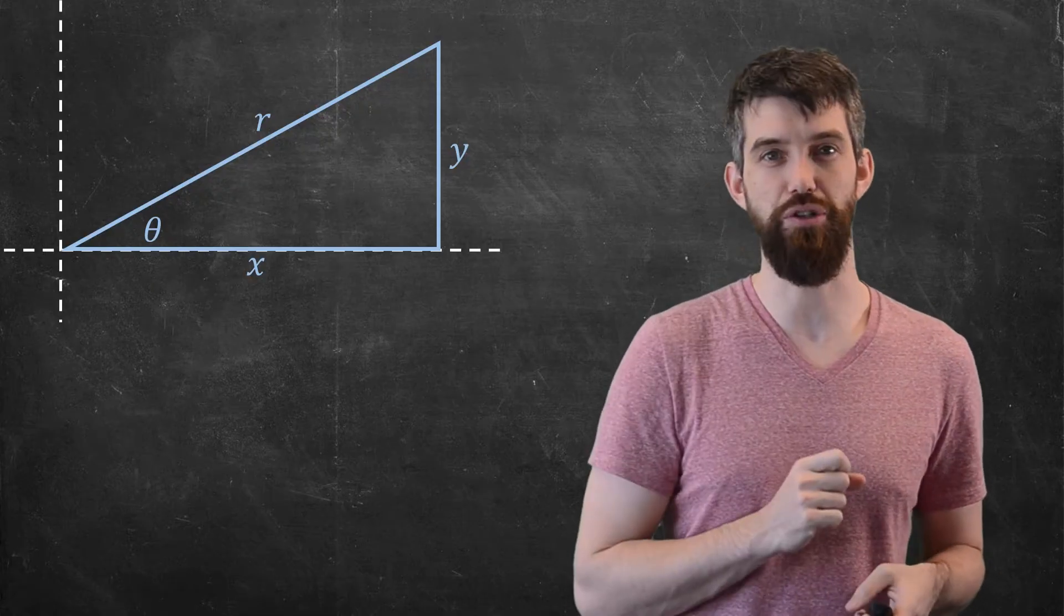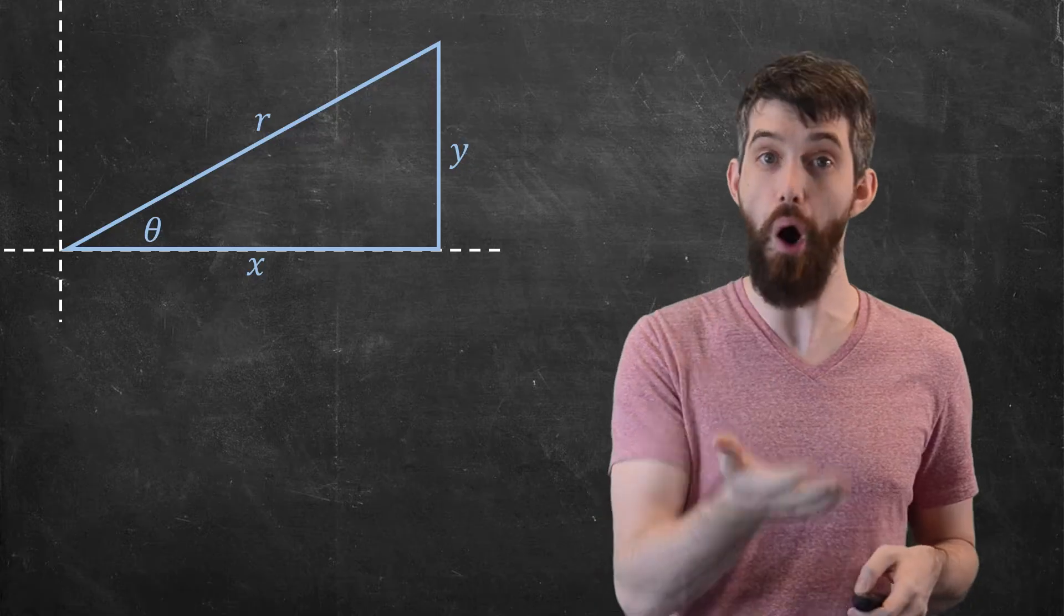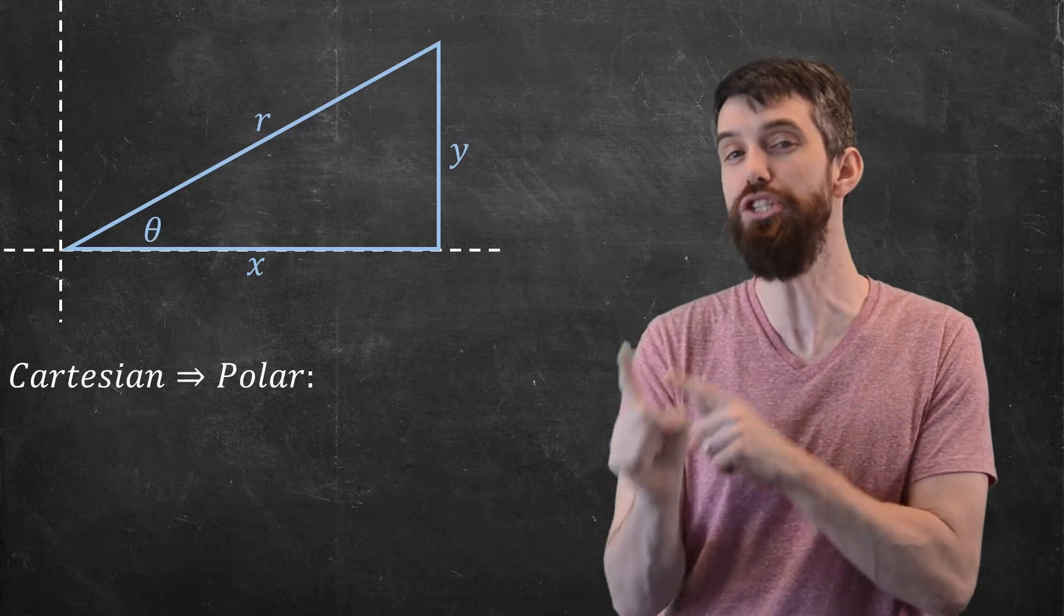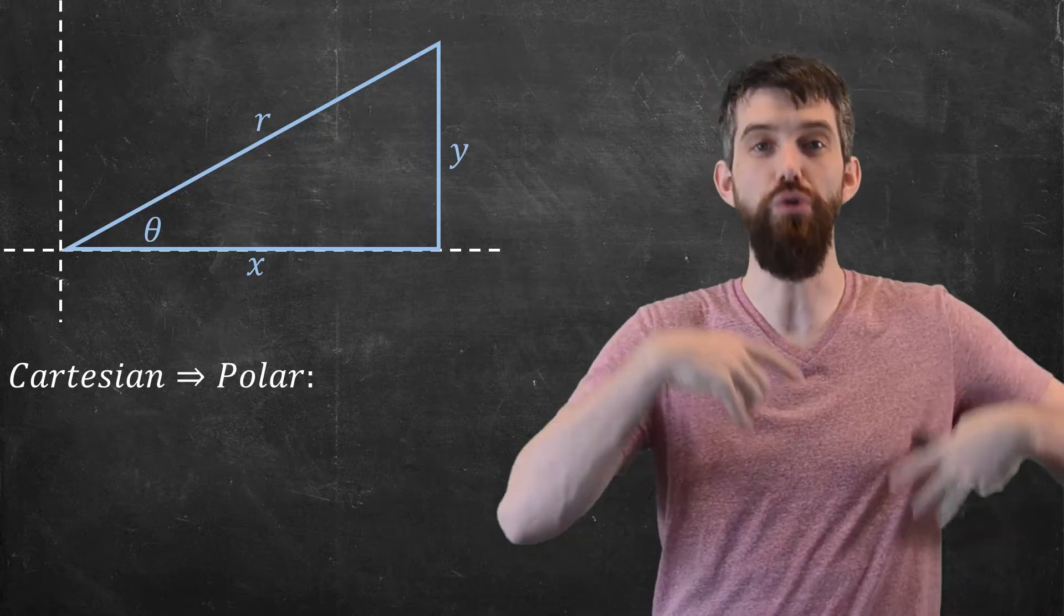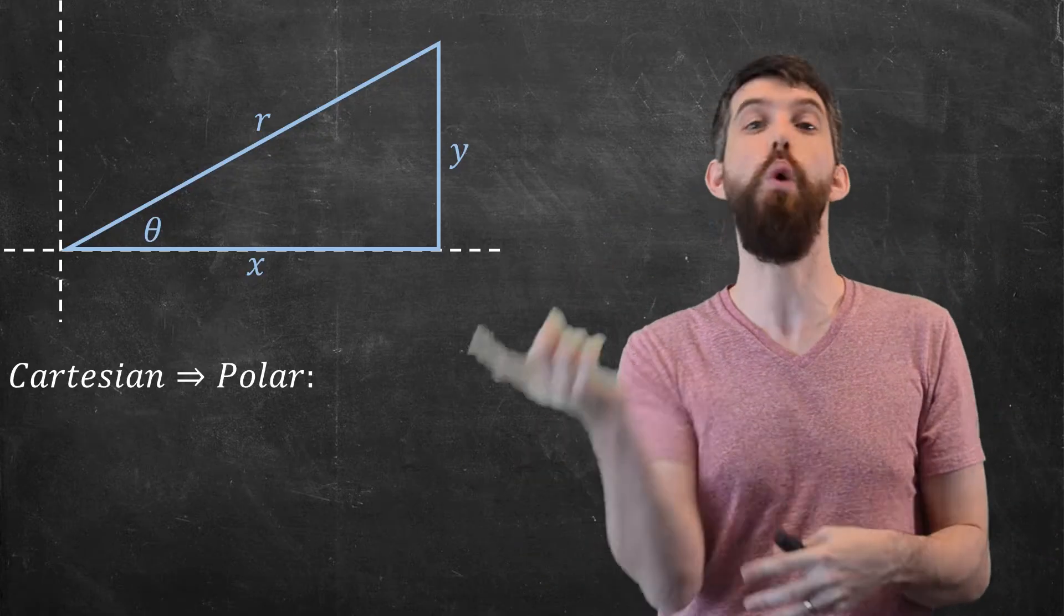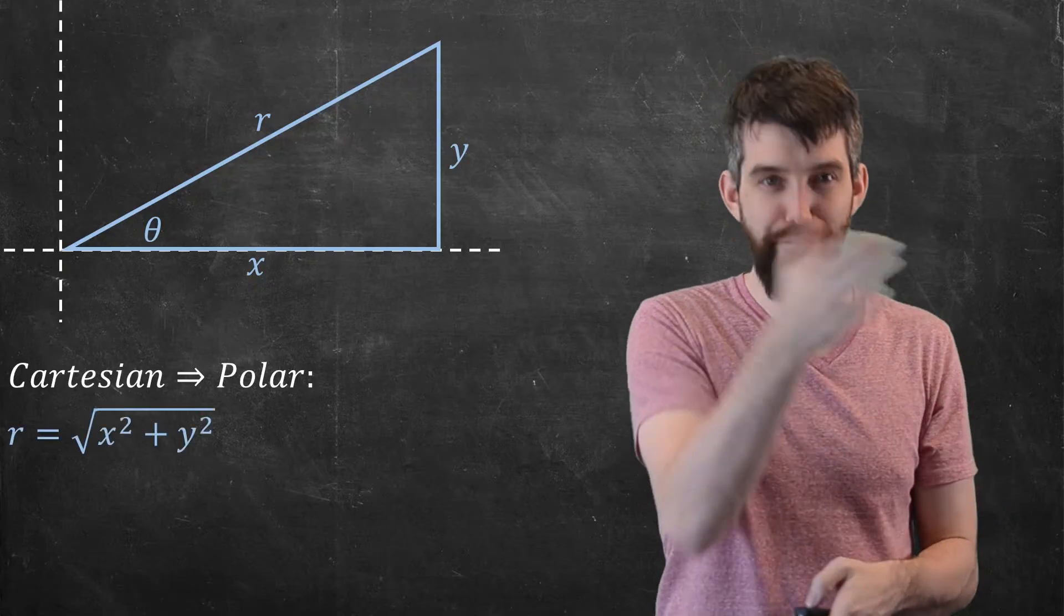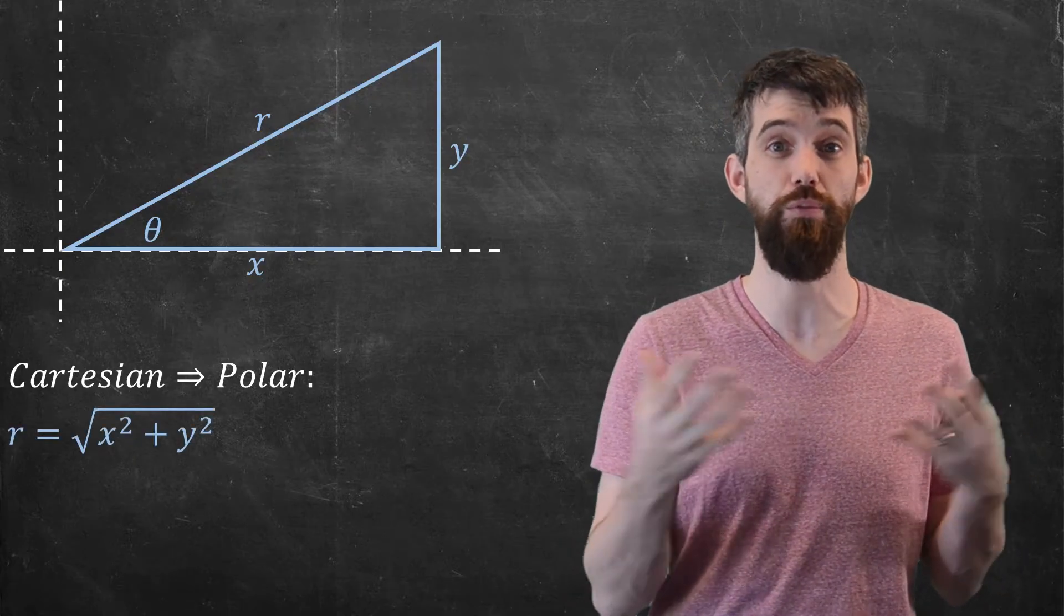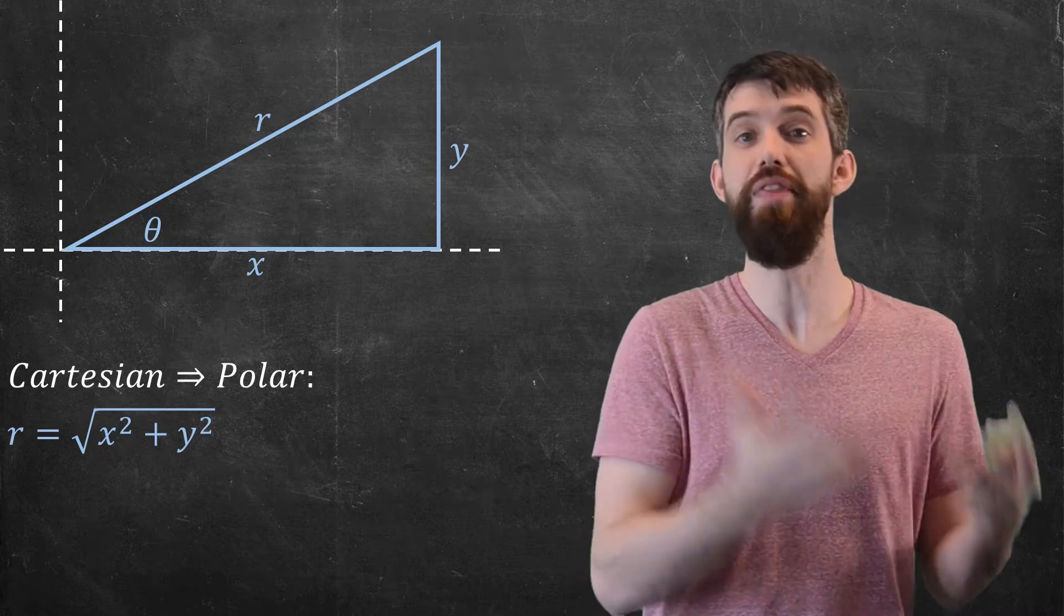There's a relationship between here. The first relationship is about the r and that obeys Pythagoras, which is to say that if I'm converting from Cartesian to polar, so you know the x and the y, and you want to find out the r and the theta, then I can find out the r by saying r is just the square root of x² + y². This is just Pythagoras.